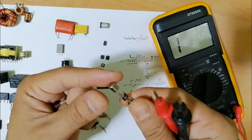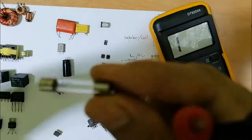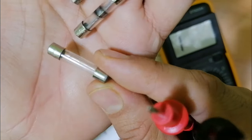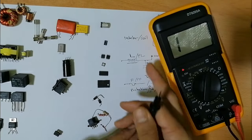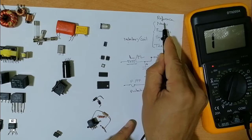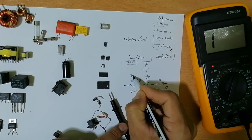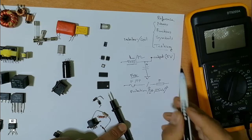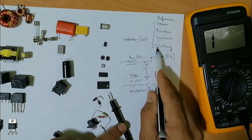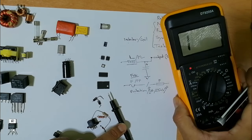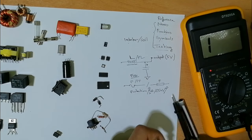Let's check a good fuse — one probe here, second probe here, and we get zero ohms in the multimeter. For this burned fuse, you can even see the thin wire inside is broken. The reference is F or PF, the name is fuse, the function is protection, and we test it using the continuity option.